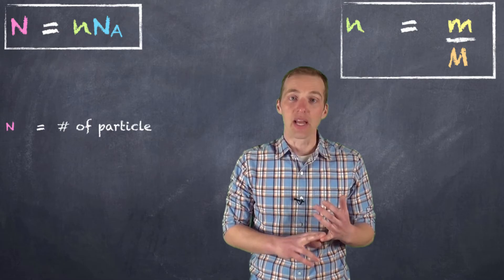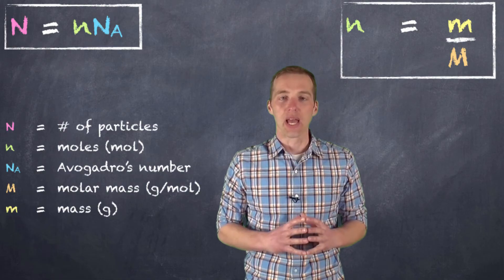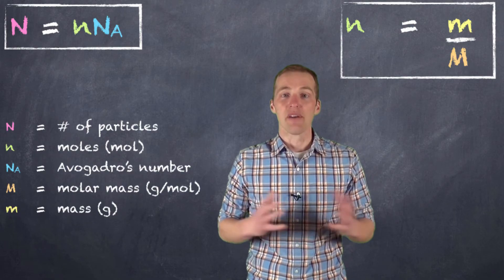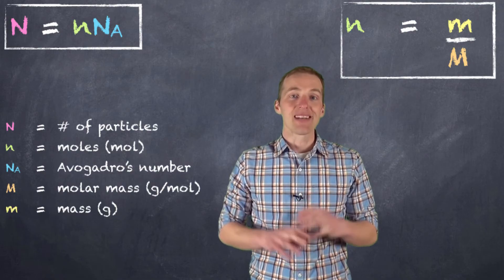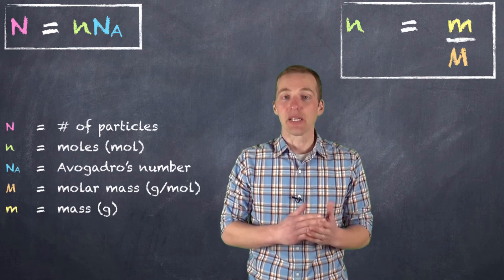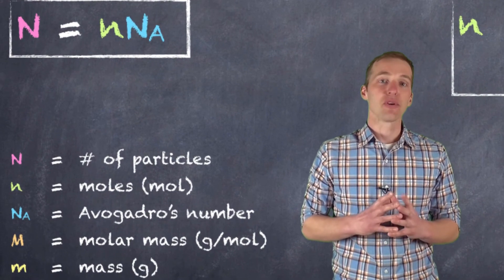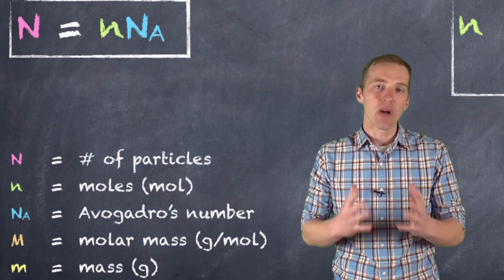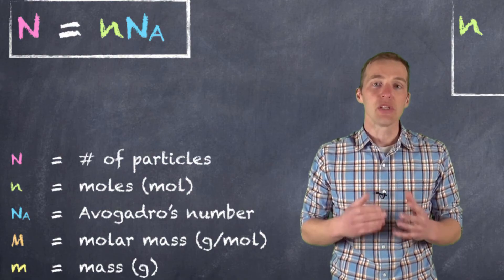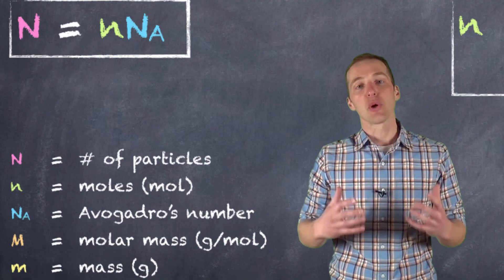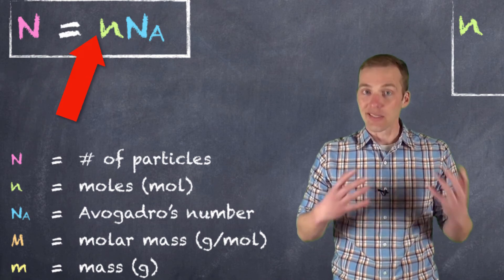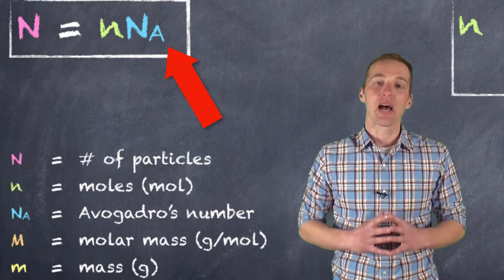Lowercase n represents the number of moles — you're going to get used to seeing lowercase n over and over again. We use the unit mol, M-O-L, to represent the number of moles of a substance — it could be moles of a molecule, an atom, or an ion. Capital M represents the molar mass in grams per mole, and remember we get that from the values on the periodic table. Mass is represented in grams, which makes sense because we're dealing with molar masses in grams per mole. The other equation I refer to affectionately as the N-N-N-N equation, and it's a way for us to calculate the total number of entities within a given sample. Lowercase n is the number of moles, and N sub A represents Avogadro's number, or the value of a mole — 6.02 times 10 to the 23.